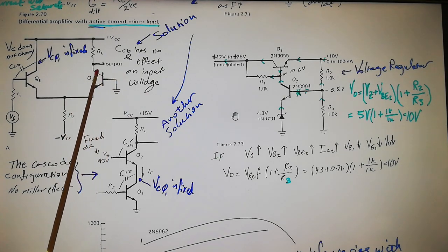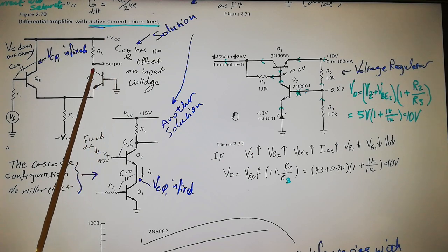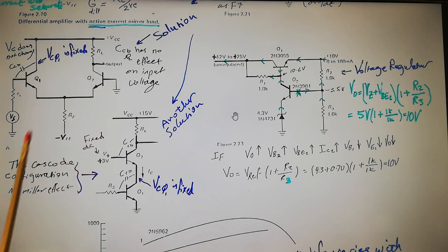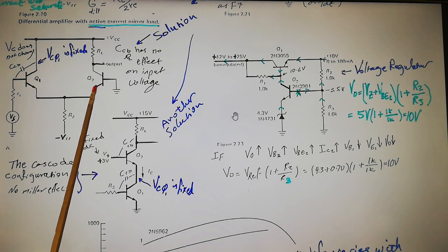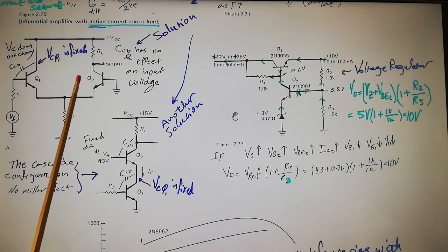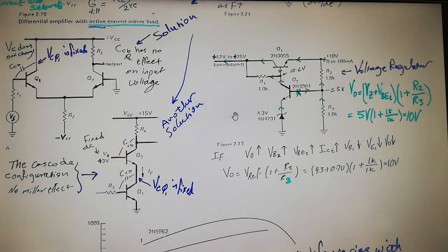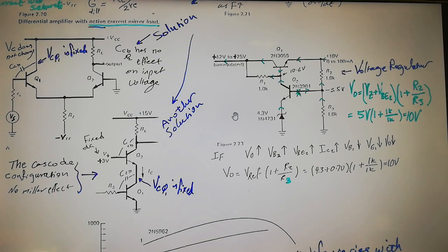When you look at this transistor by itself, it's a common-base amplifier. Looking at both together, they are a differential amplifier. It's a common-base amplifier because the base is grounded, the signal is fed through the emitter, and the output is taken from the collector. So transistor Q2 operates like a common-base amplifier. The same idea also appears in the cascode configuration, where we have no Miller effect.